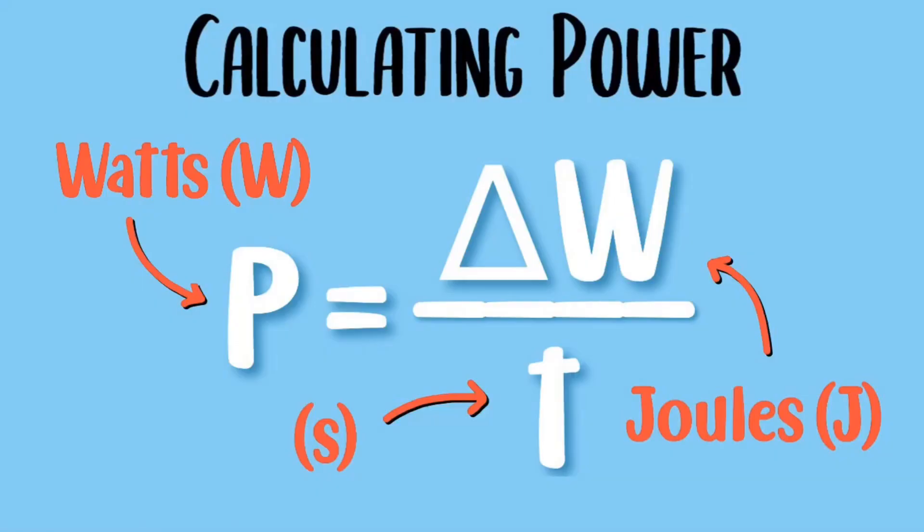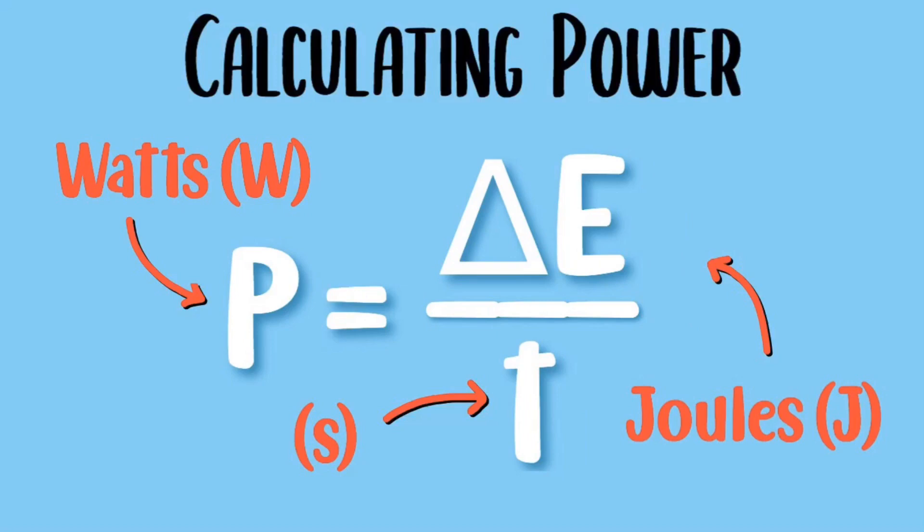Now let's look at how we could calculate power. To calculate power you would do amount of work done divided by the time. Since we said that work done equals the energy transferred, we could also say that power equals energy transferred over time.